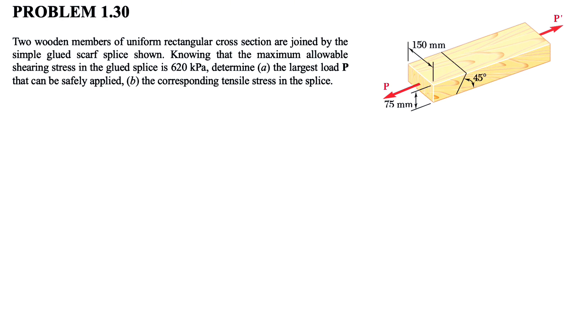We have these two wooden members of uniform rectangular cross-section that are joined by the simple glue scarf splice. As we can see, we know that the maximum allowable shearing stress in the glue splice is 620 kilopascals. So the first given here is the maximum of the shearing rate is 620 kilopascals.